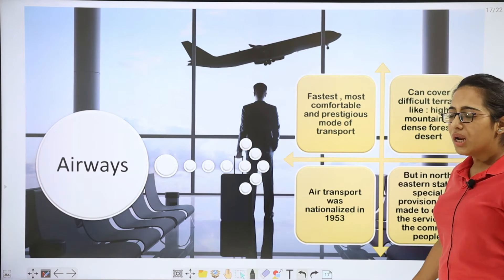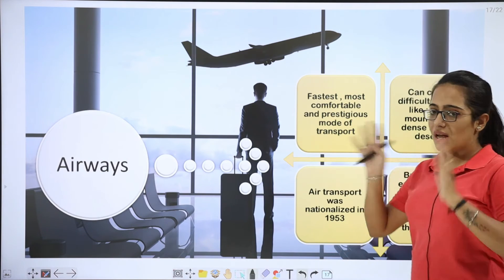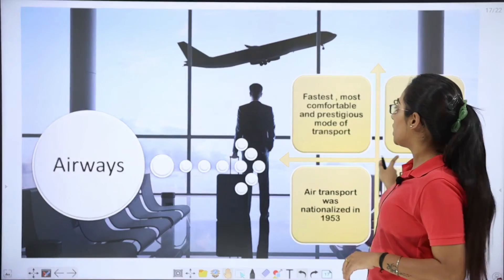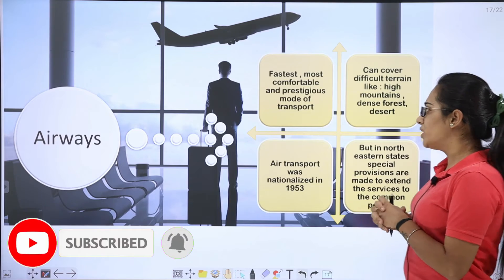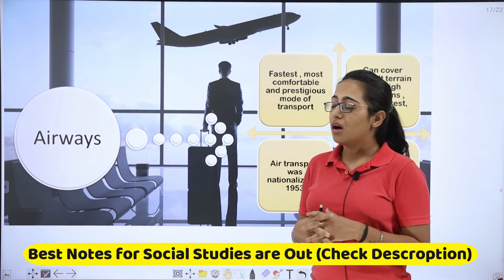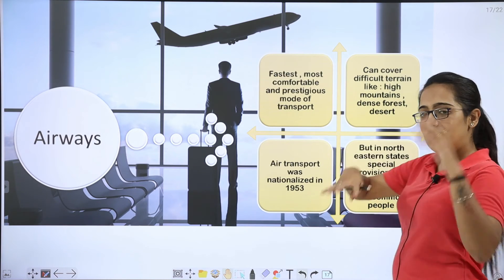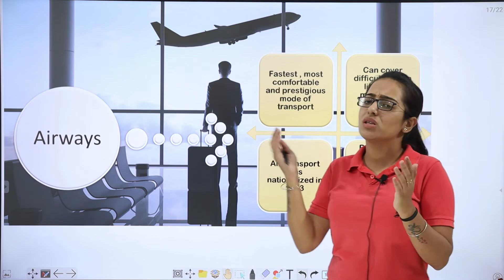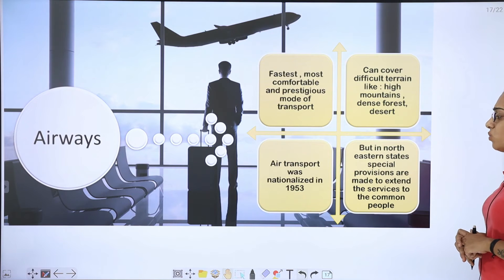Airways — we are all aware of aeroplanes, helicopters and various airports, all connected. It is the fastest mode of transportation. Yes, it is very true — fastest, most comfortable and prestigious. It is considered a luxurious transport. It can easily cover high mountains and ocean seas because it goes from above, so there is no problem for airways.